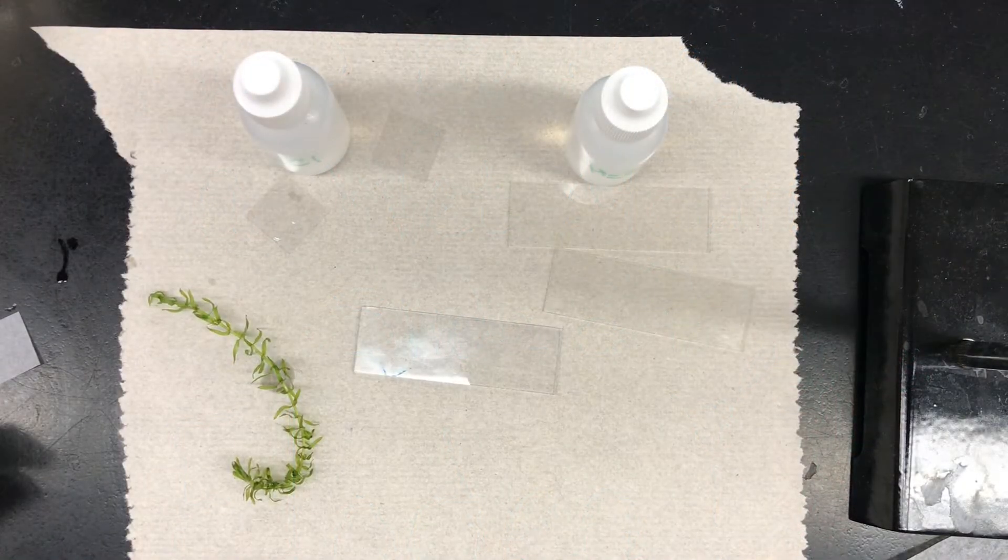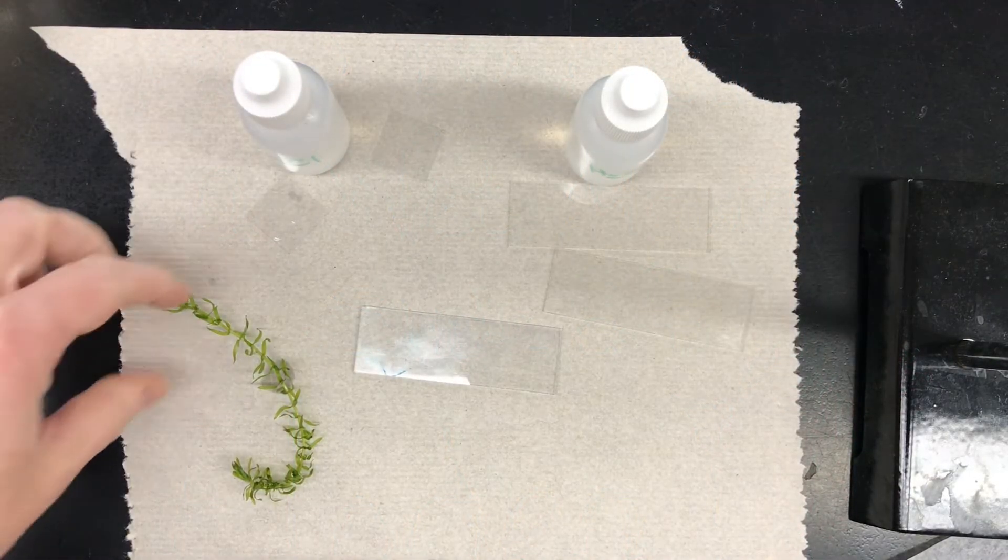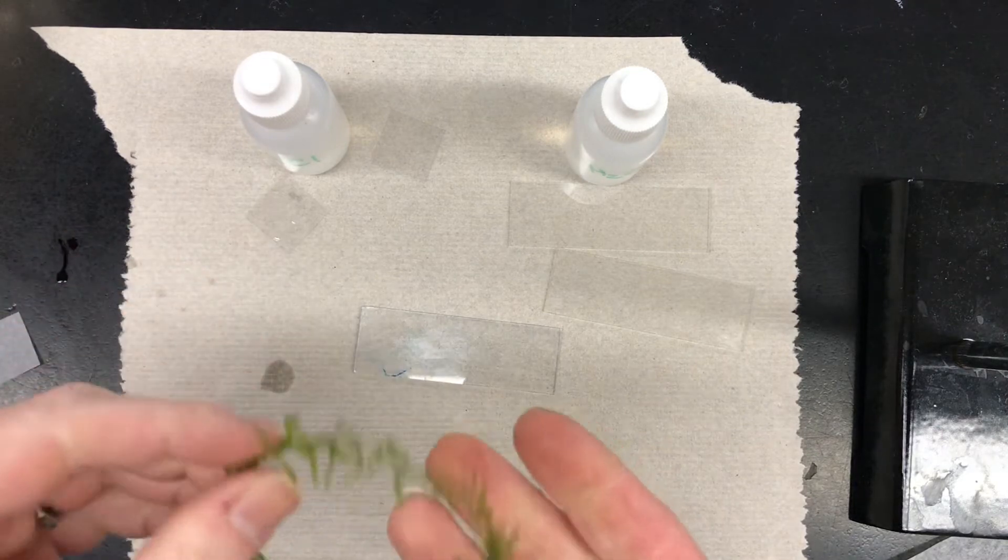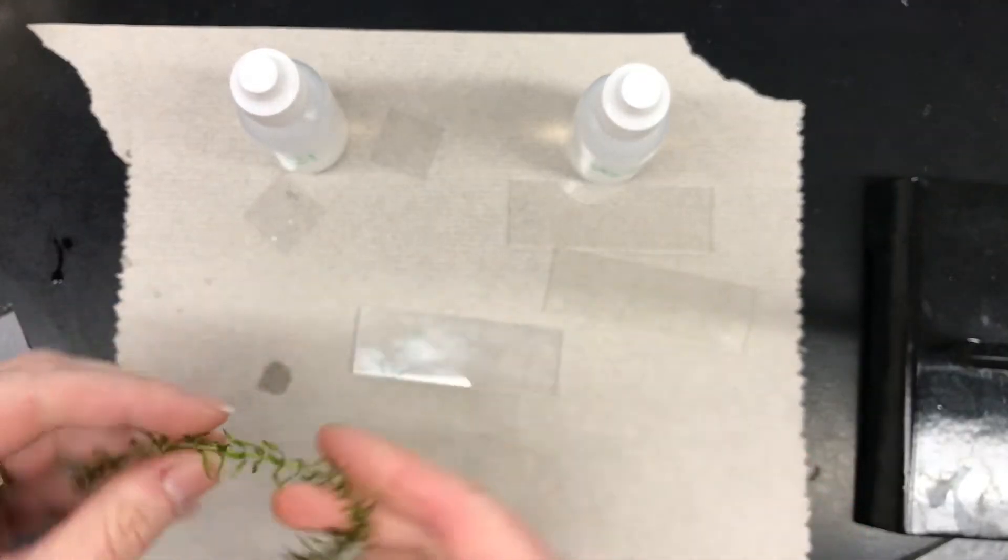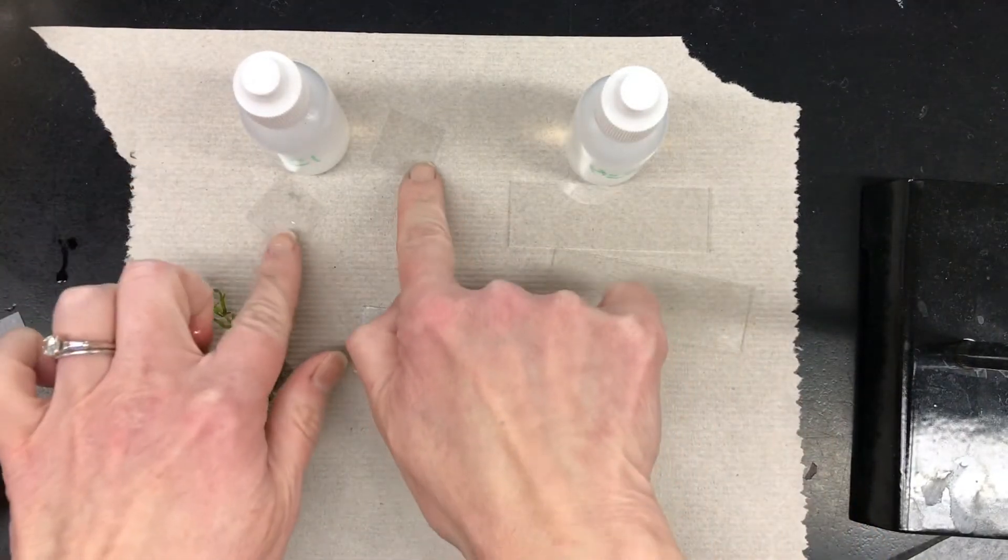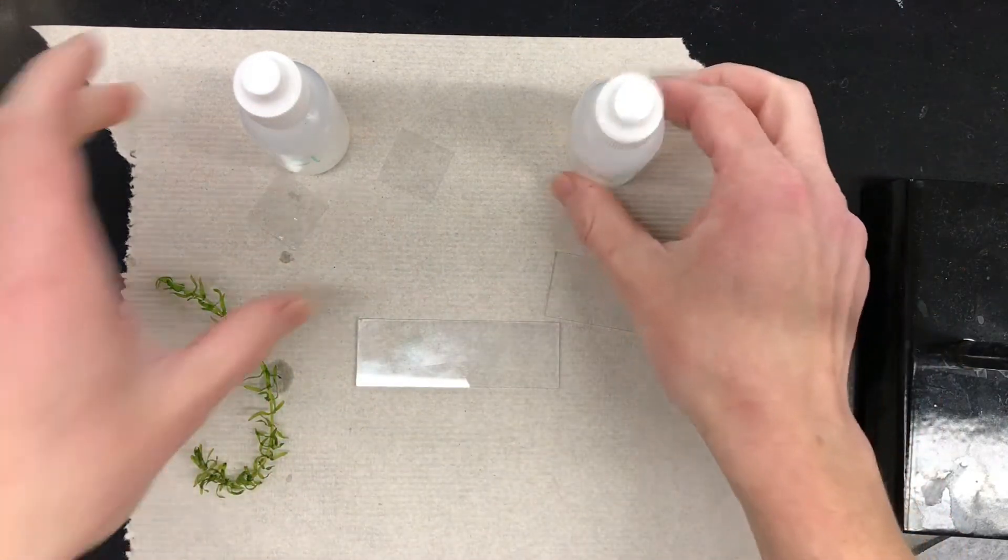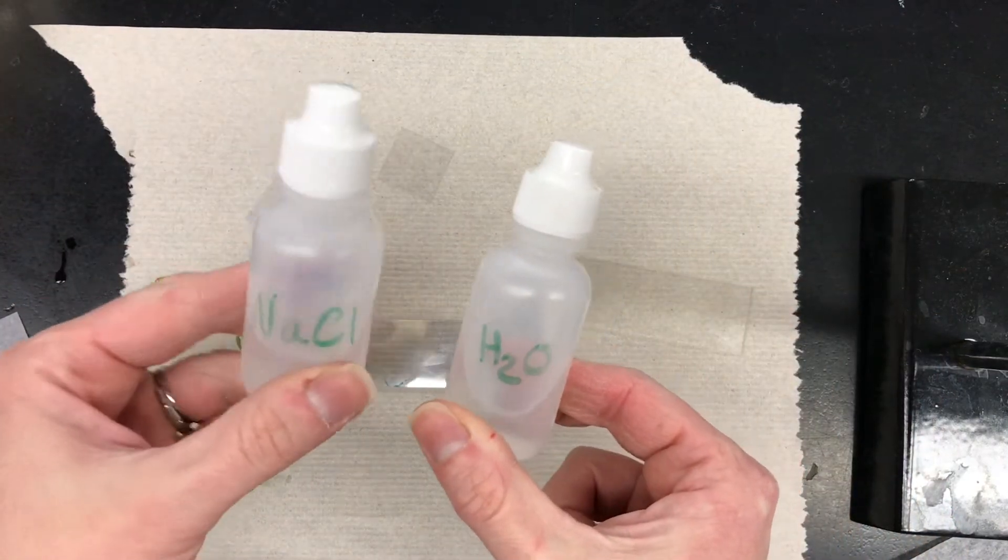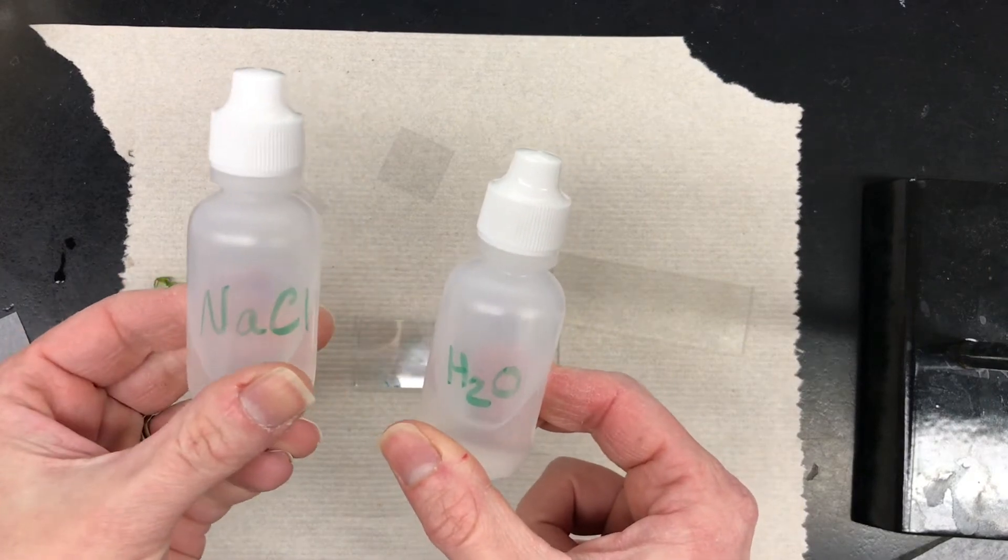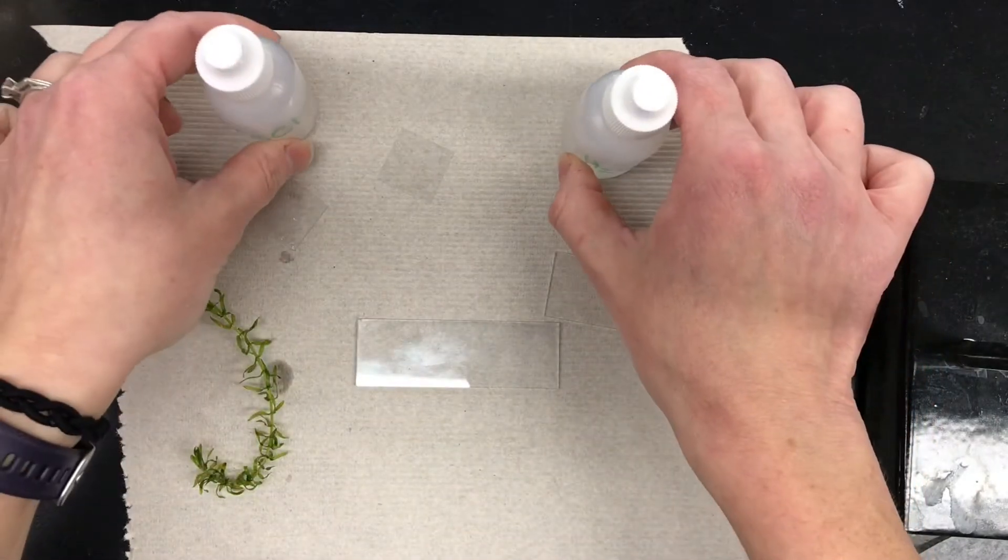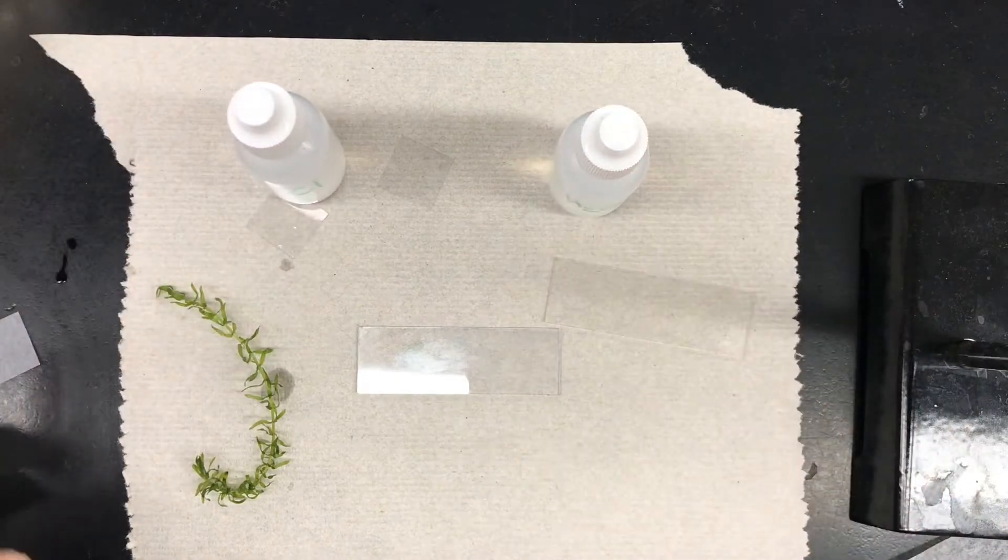To prepare a wet mount slide of Elodea, which is this beautiful plant right here, we need two cover slips, two slides, water, and salt dissolved in water. That's the NaCl. So today we're going to make two slides.